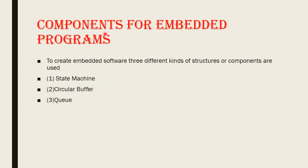The three important components for embedded programs are State Machine, Circular Buffer, and Queue.